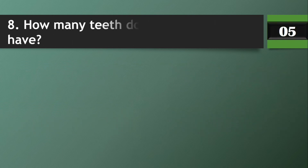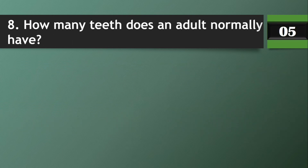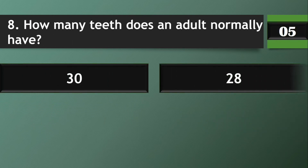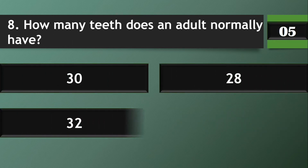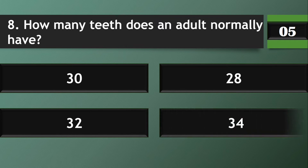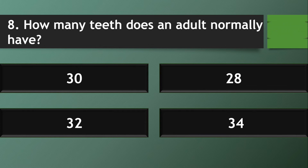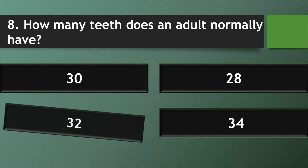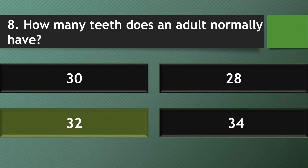Question 8: How many teeth does an adult normally have? Answer: 32.